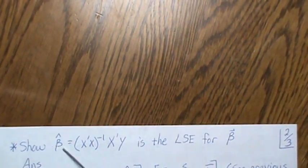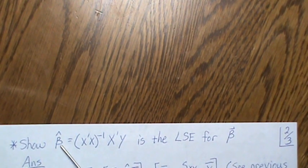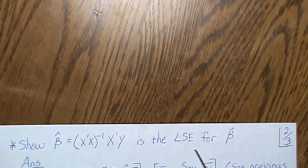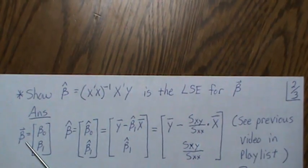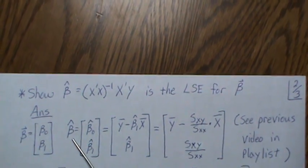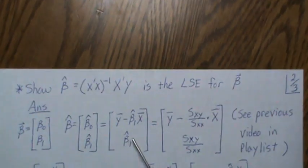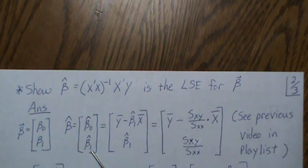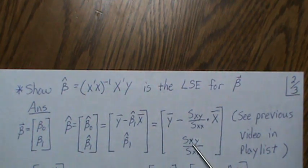We're going to do some matrix manipulations to show that the vector beta hat, represented as the least squares estimate for beta, equals (X'X)⁻¹ X'y. As a reminder, the beta vector is [beta 0, beta 1], and the least squares estimates beta hat are beta 0 hat and beta 1 hat. In previous videos, beta 1 hat was sxy over sxx, and beta 0 hat was y-bar minus beta 1 hat times x-bar, where sxy and sxx were defined previously.